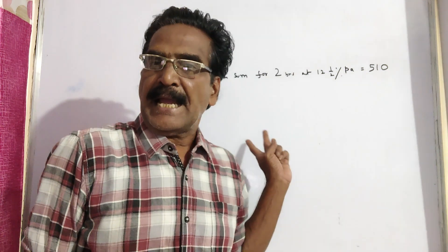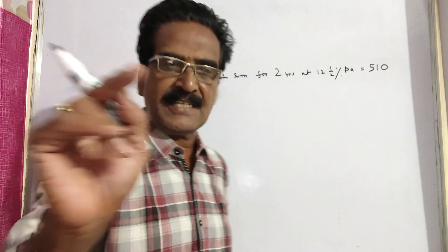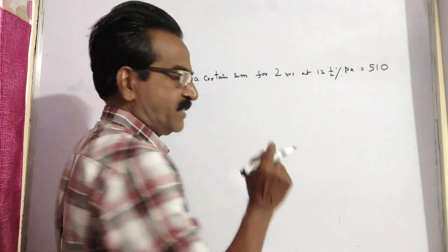Friends, when the time period is 2 years, the relation between CI and SI is given by this formula.